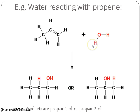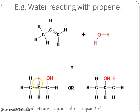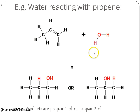With propene and water, the hydrogen can add on to the middle carbon and the OH to the end carbon, or hydrogen adds on to the end carbon and OH adds on to the middle carbon — so again a mixture of products, both alcohols: propan-1-ol and propan-2-ol.